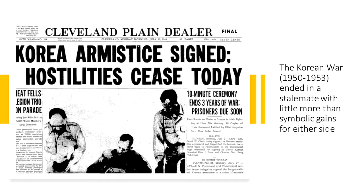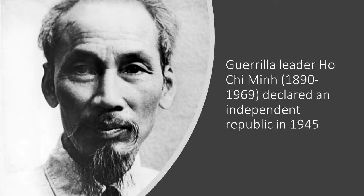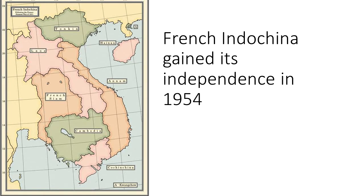French Indochina was another vital geography of the Cold War. With the United States' support, France tried to reimpose imperial rule there after the communist and nationalist guerrilla leader Ho Chi Minh (1890–1969) declared an independent republic in 1945. The French were defeated in 1954, and French Indochina gained its independence. Laos and Cambodia became separate states, and Vietnam was temporarily divided into separately governed northern and southern regions.